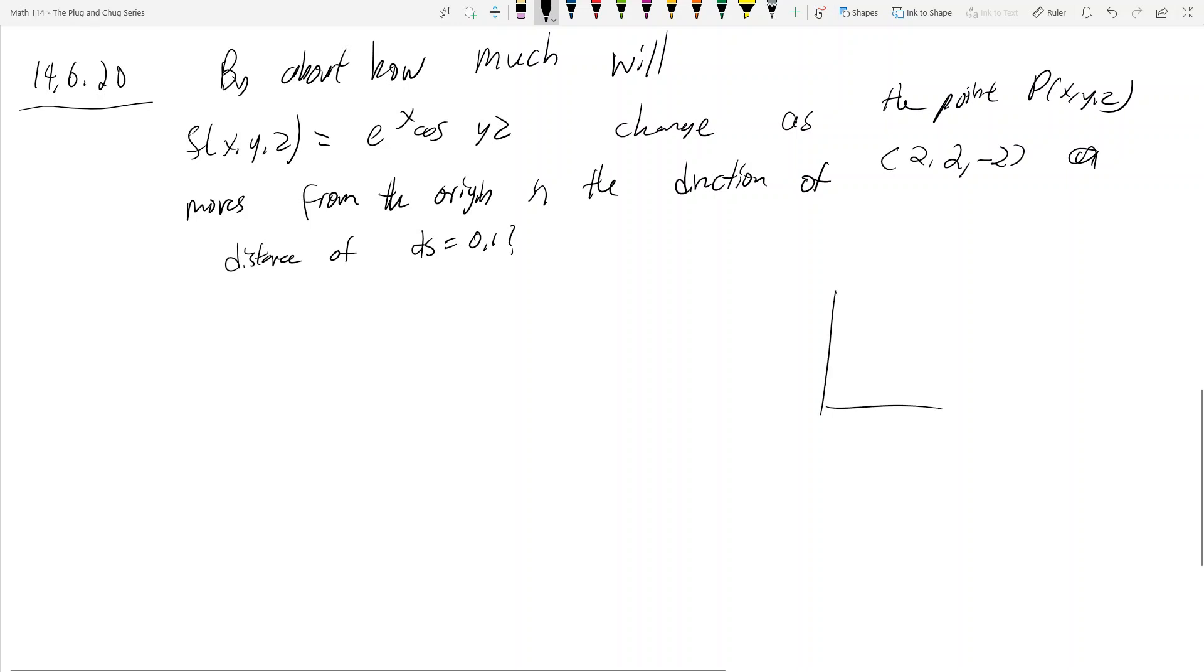In plain English, we have the point p at the origin, and we're moving in the direction of 2, 2, negative 2. So we're moving in this direction, and then we're moving a distance of ds which is equal to 0.1. We want to estimate how much, what the functional value here is compared to this point at the origin. So what's the change in the function value? And how do we do that?